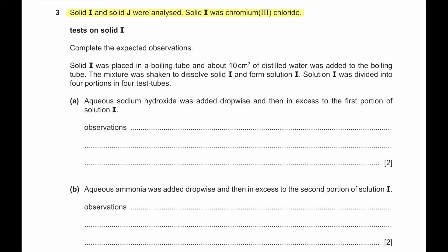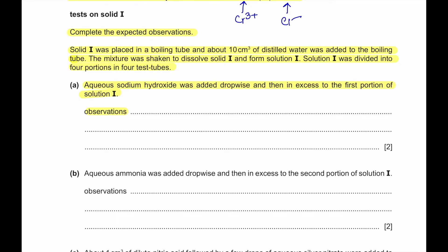Question number 3. Solid I and solid J were analyzed. Solid I was chromium 3 chloride, so we know chromium ions and chloride ions are present. When aqueous sodium hydroxide is added dropwise to solution I, a green precipitate forms. When sodium hydroxide is added in excess, the green precipitate dissolves to form a green solution.